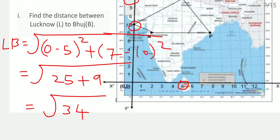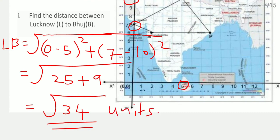Since the distance between two longitude lines is 150 kilometres, we cannot convert properly, so we keep the answer as under root 34 units.